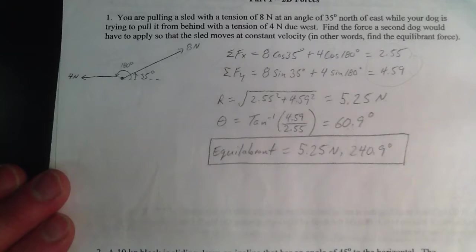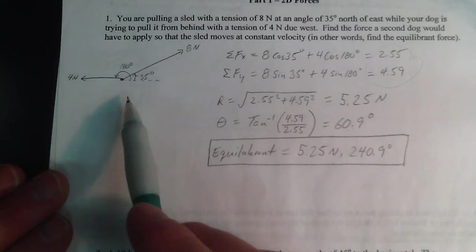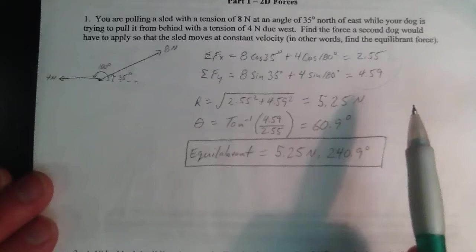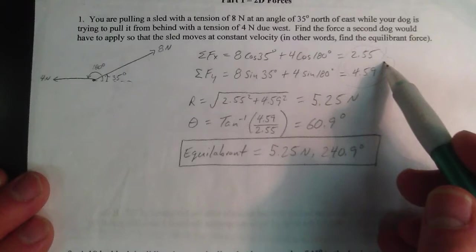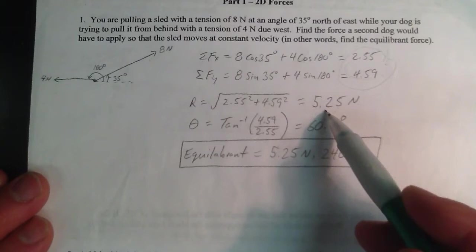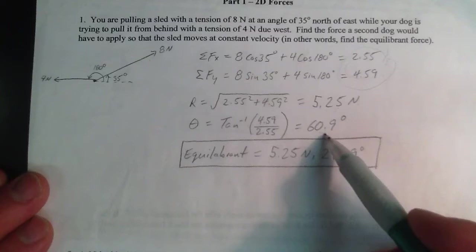This first problem is an equilibrium problem. We have a man and his dog fighting over a sled, and I need to know what sort of third force am I going to apply to cancel these two out. The way I do that is I take these two forces, add them up using the component method. There's the resultant components.